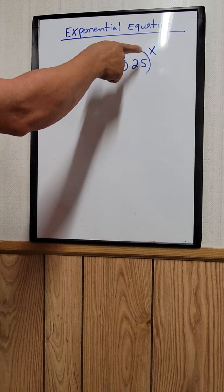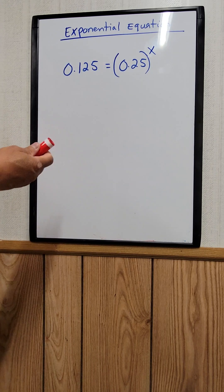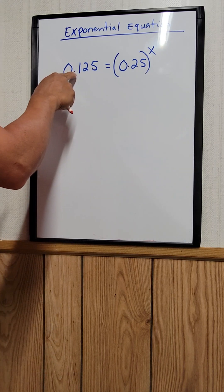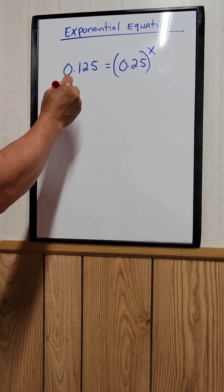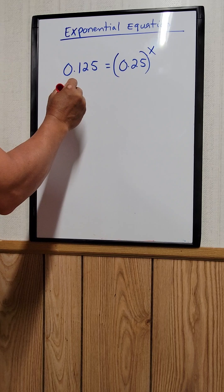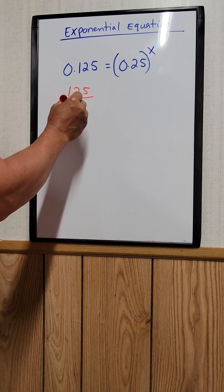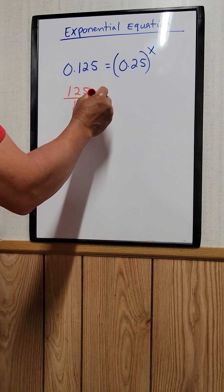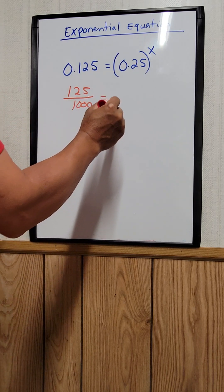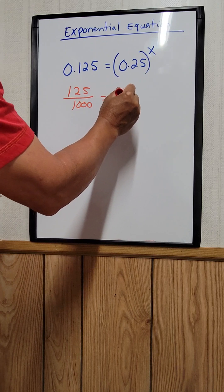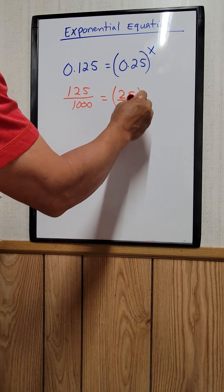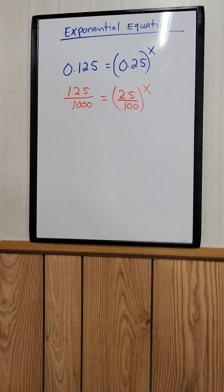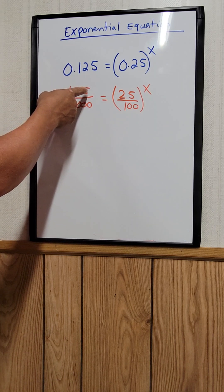Let's solve this exponential equation for x. The first thing we need to do is convert the decimals to fractions. So 0.125 we can convert as 125 over 1000, and we do the same thing to 0.25 — we can convert it to 25 over 100, the whole thing to the x power.